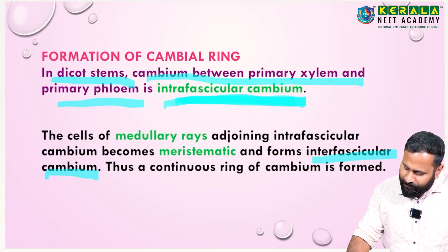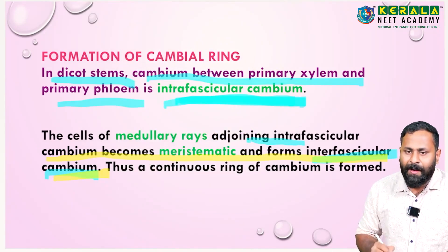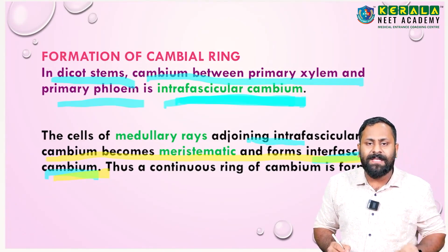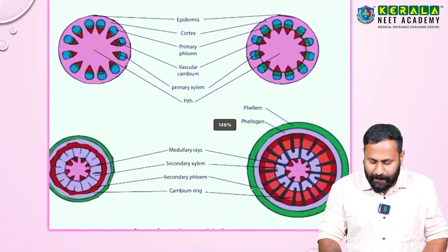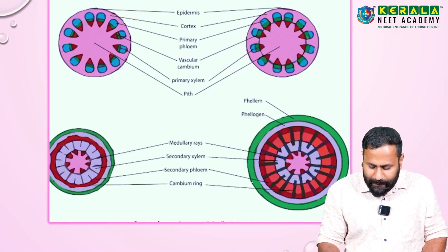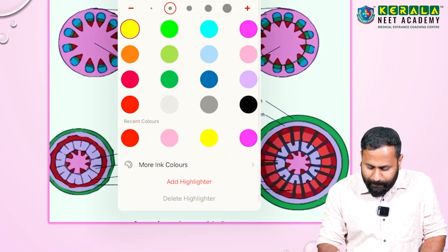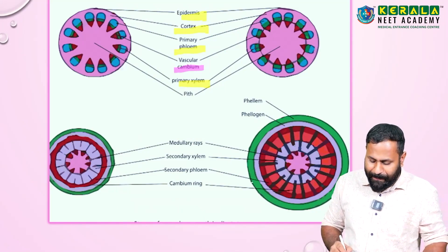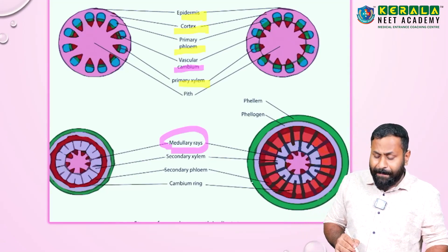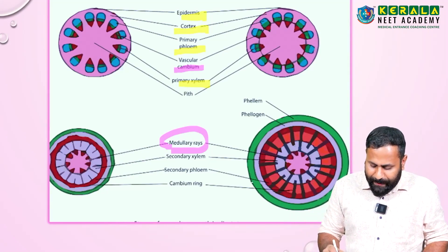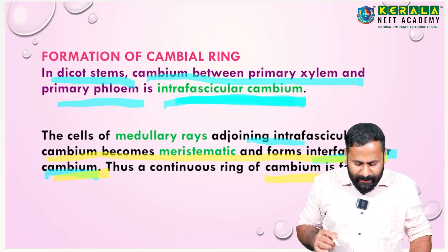When interfascicular cambium is fully formed, both intrafascicular and interfascicular cambium together form a continuous ring called the cambial ring. In the NCRT diagram you can see: primary phloem and primary xylem with intrafascicular cambium between them, joined by medullary rays which become meristematic to form interfascicular cambium, completing the cambial ring.